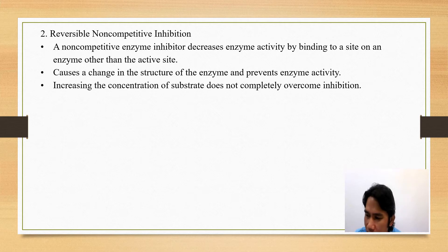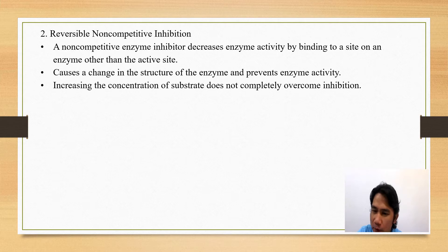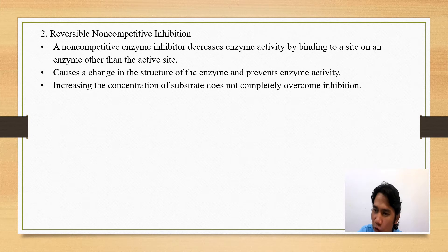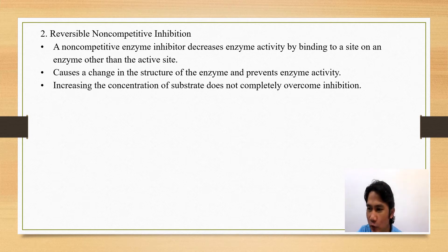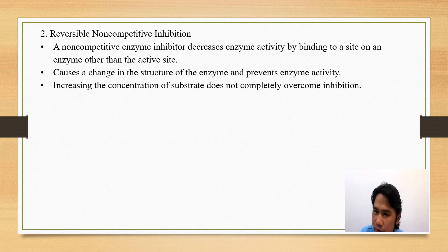Next is reversible non-competitive inhibition. The non-competitive enzyme inhibitor decreases enzyme activity by binding to a site on the enzyme other than the active site. When the inhibitor binds to the other location, there is a conformational change in the enzyme structure, which results in a change in the active site. The enzyme's active site can no longer recognize the substrate because they no longer have a similar shape. Increasing the concentration of the substrate does not completely overcome this inhibition.